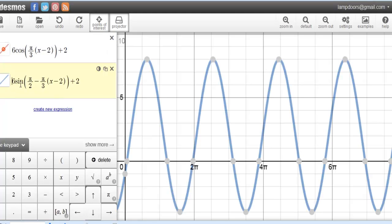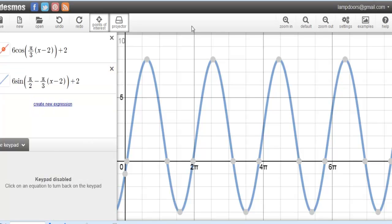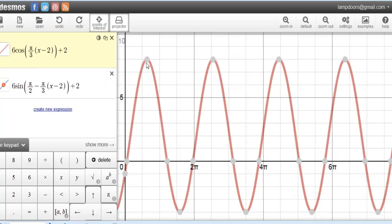This one is 6 sine of π/2 minus the same exact argument for the cosine, and then plus 2. Actually, before I do that, let me just point out that the points on the cosine—(2,8) and (20,8)—are there. And we also have (5,-4), so we actually know that x-coordinate. But let me go back to the sine one, which is exactly the same.